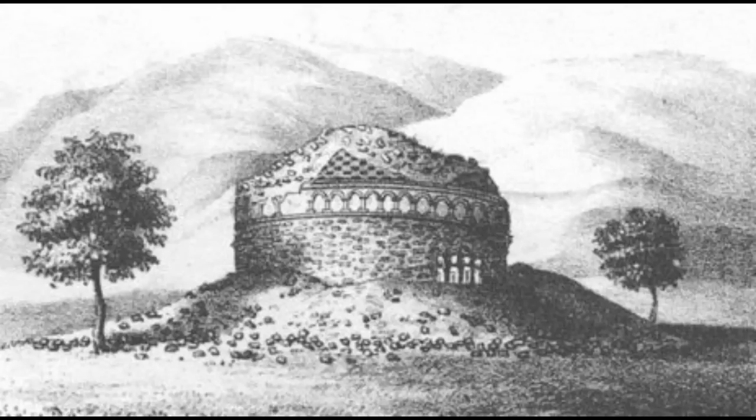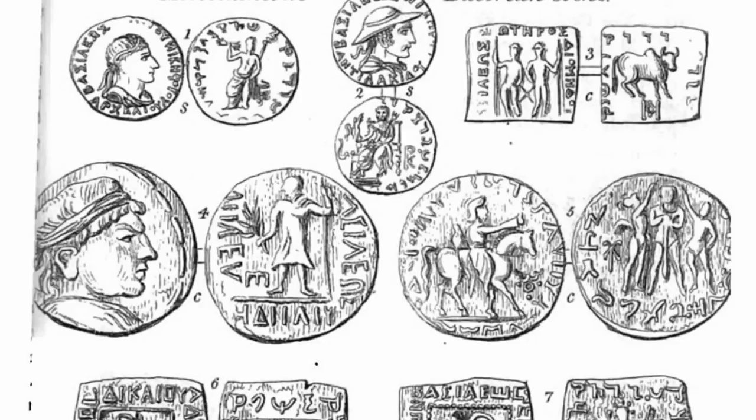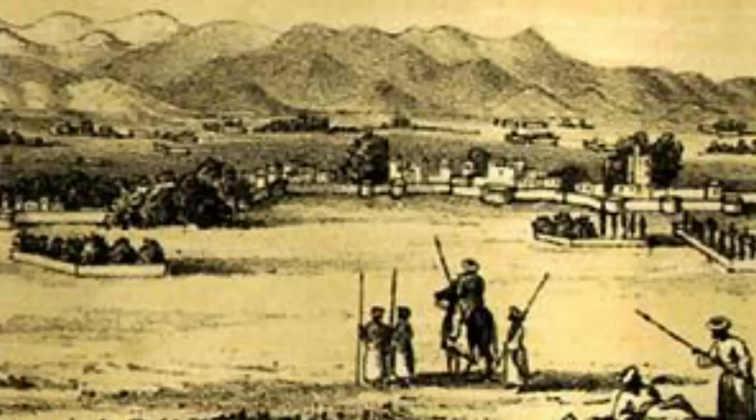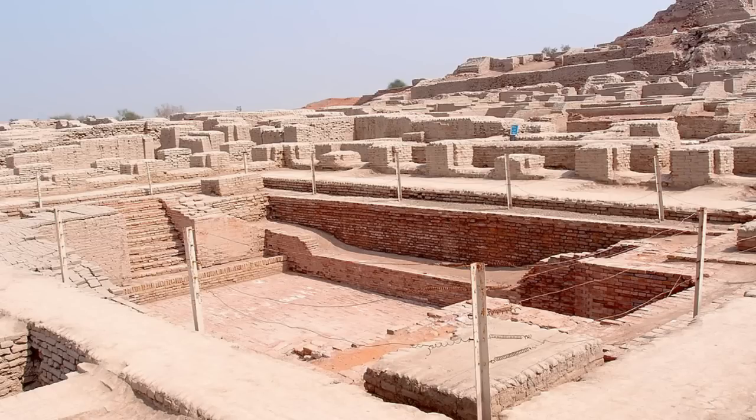Though he lacked formal training, he managed to excavate over 9,000 individual objects from Afghanistan and modern Pakistan. But it was in 1829, on the shores of the Indus River, near the small village of Harappa, that Masson literally made history.